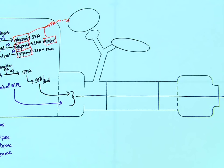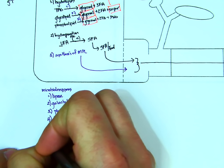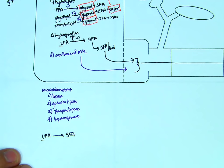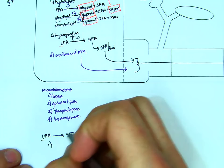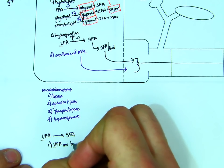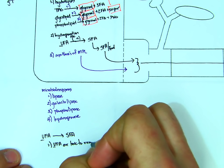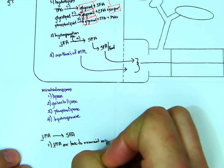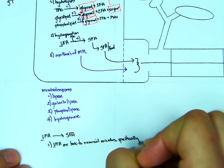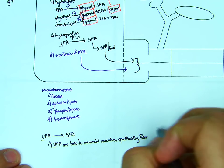We want to come back and talk about this unsaturated fatty acid to saturated fatty acid conversion — UFA to SFA — and why that happens. We want to remember that unsaturated fatty acids are toxic to ruminal microbes, specifically fiber fermenters.